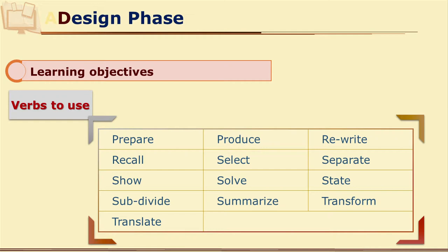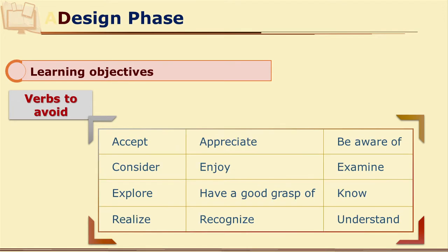But remember to avoid certain verbs as they may end up making you write vague objectives. Avoid verbs like: accept, appreciate, be aware of, consider, enjoy, examine, explore, have a good grasp of, know, realize, recognize, understand. It is very clear how we need to write performance outcomes.